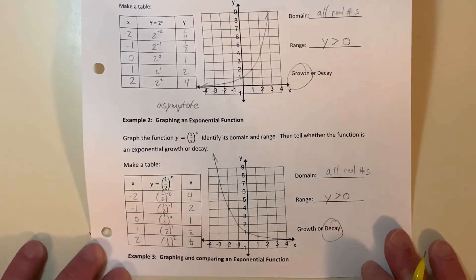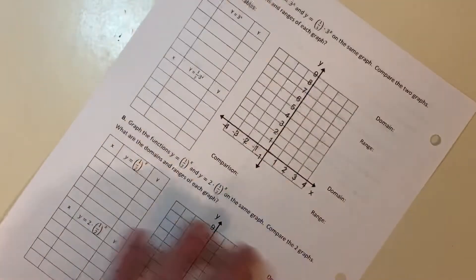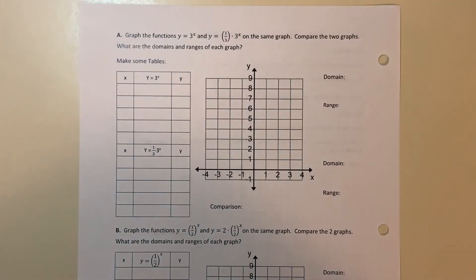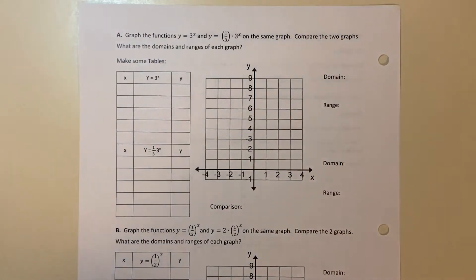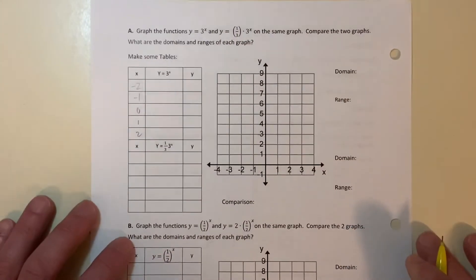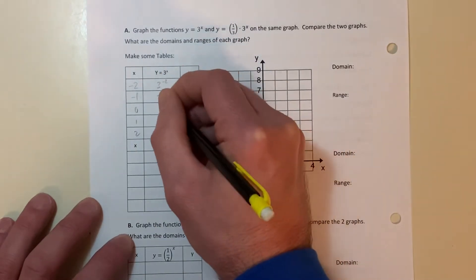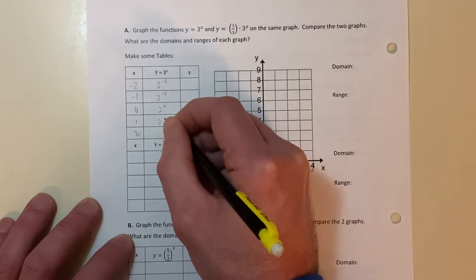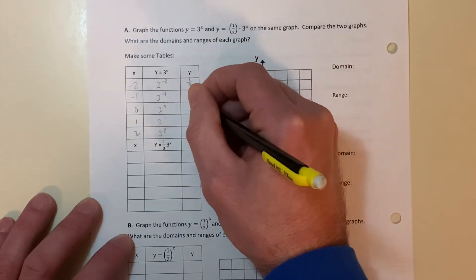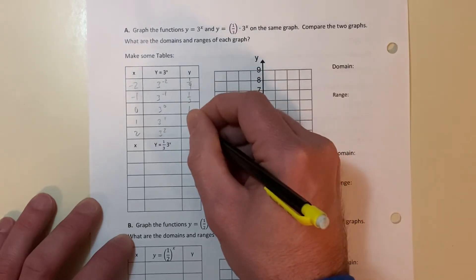Example three is graphing and comparing exponential functions. They want us to graph y equals three to the x and y equals one-third times three to the x on the same graph and compare the two. For y equals three to the x, table: negative two, negative one, zero, one, two. Three to the negative two: flip it and square it — one-ninth. Three to the negative one: flip it — one-third. Anything to the zero power is one. Three to the first is three. Three to the second is nine.